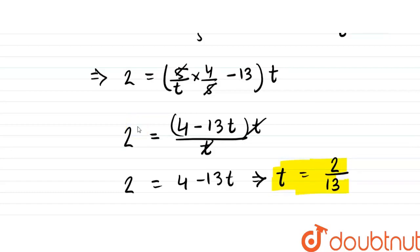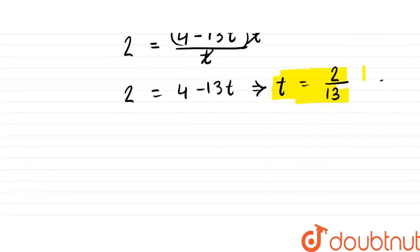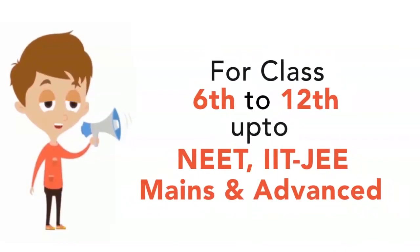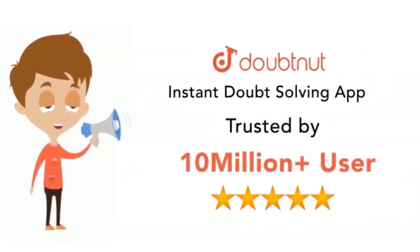Checking the options: when the car speed is 10 meters per second, the answer is 0.2 seconds. When the car speed is 30 meters per second, t equals 2/13 seconds. This is a Class 12 IIT advanced level question, and today 10 million students use Doubtnet to solve such doubts.